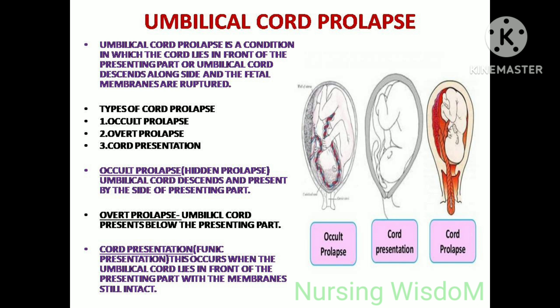Umbilical cord prolapse is a condition in which the cord lies in front of the presenting part or descends alongside it when the fetal membranes are ruptured. Types: occult prolapse (otherwise called hidden prolapse), where the umbilical cord descends and presents by the side of the presenting part; overt prolapse, where the umbilical cord presents below the presenting part; and cord presentation (funic presentation), which occurs when the umbilical cord lies in front of the presenting part with the membranes still intact.